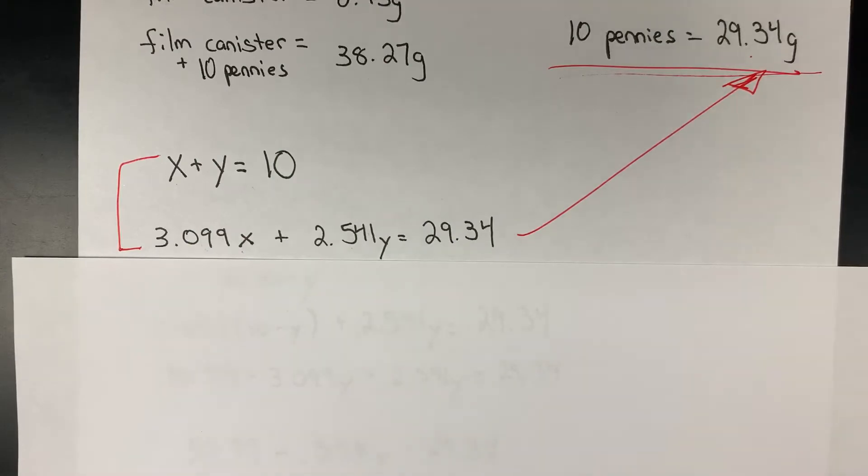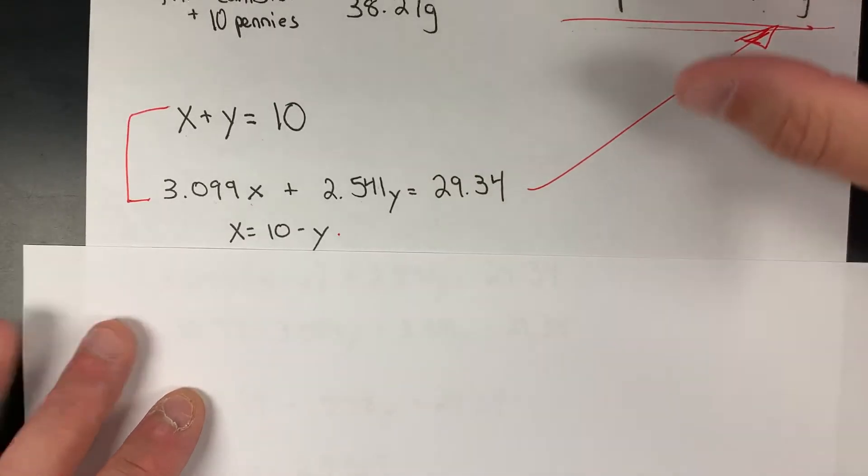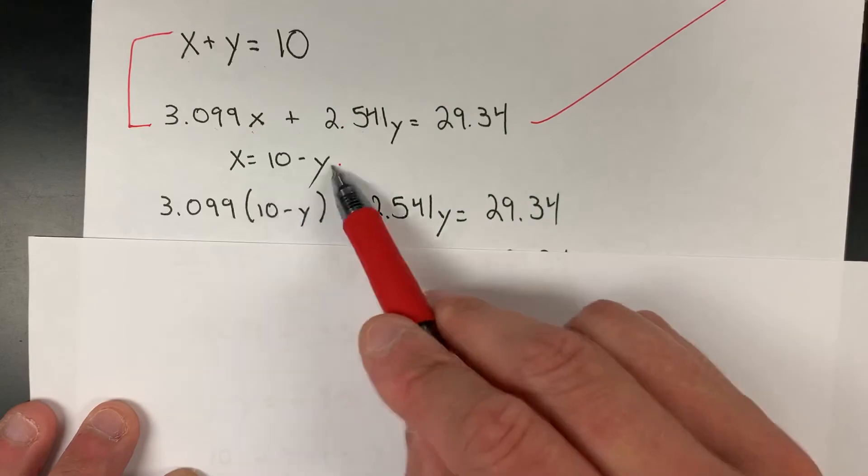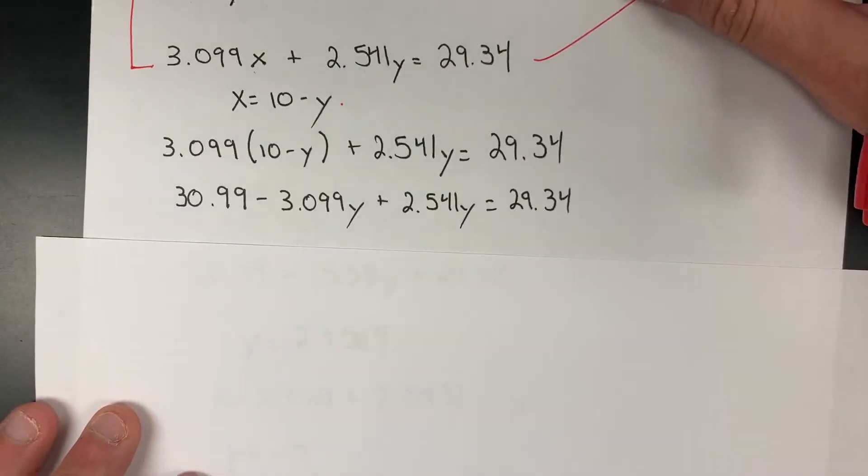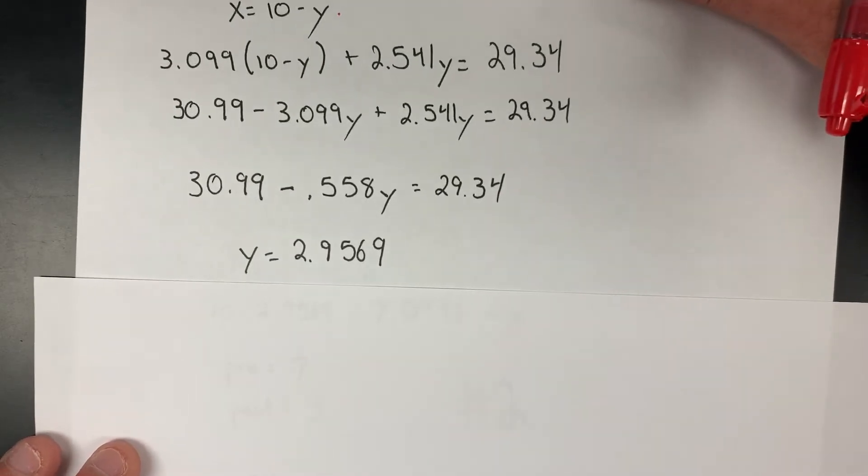Question number two asks us to now solve for x and y. To do that, I first rearrange to solve for x. I perform a substitution step where I take 10 minus y and plug that in for x. From there, working through a series of steps, I isolate and solve for y.